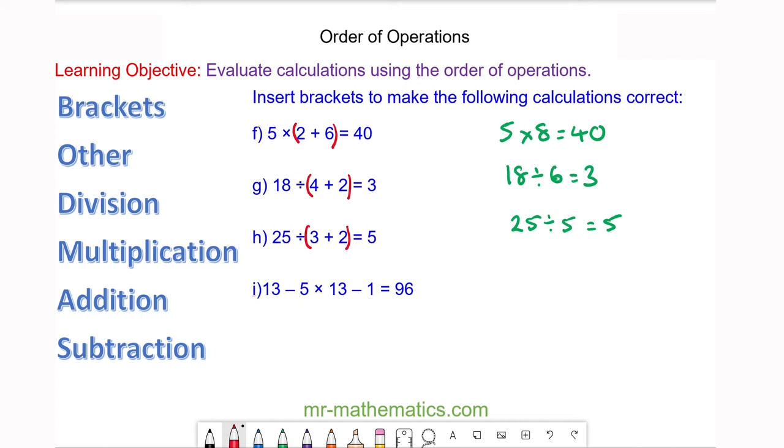Finally, for question i, we have the bracket before the 13 and after the 5, and again before the 13 and after the -1. We can check this: 13 - 5 is 8 multiplied by 13 - 1, which is 12, and 8 × 12 does make 96.